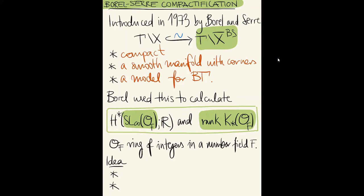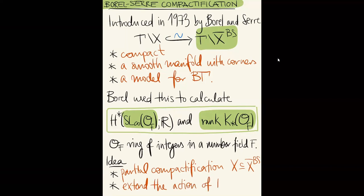The idea behind the construction is the following: instead of compactifying X/gamma directly, we construct a partial compactification or bordification of X before modding out by the action of gamma, then extend the action of gamma to this partial compactification. The quotient by this action is what we call the Borel-Serre compactification. The construction of this partial compactification is very technical, but this gives you an idea of what's going on.